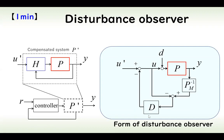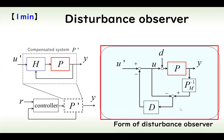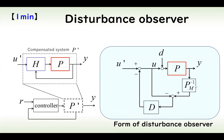A disturbance observer uses P as the plant and PM as the inverse of the plant model. By using this form, the compensated system input-output relation can be made similar to PM, increasing the robustness of the control system.